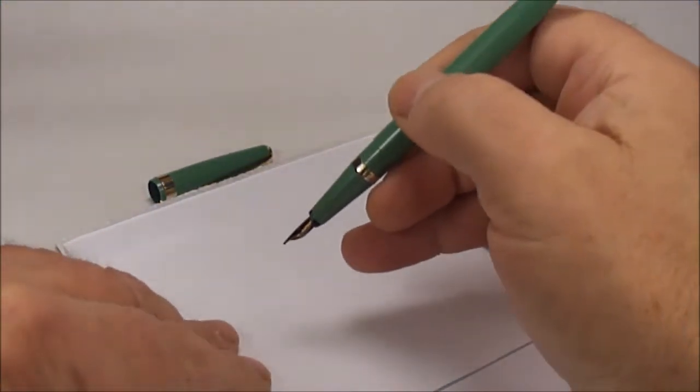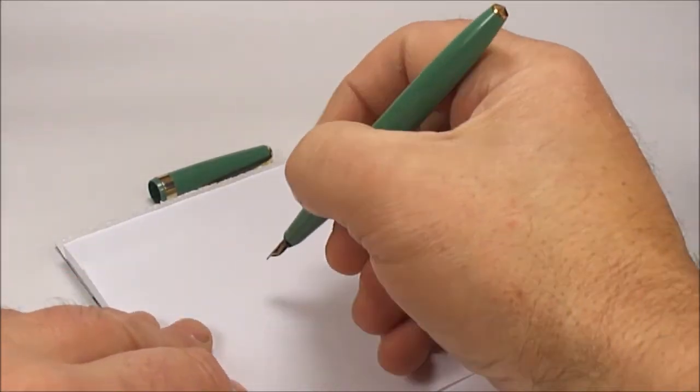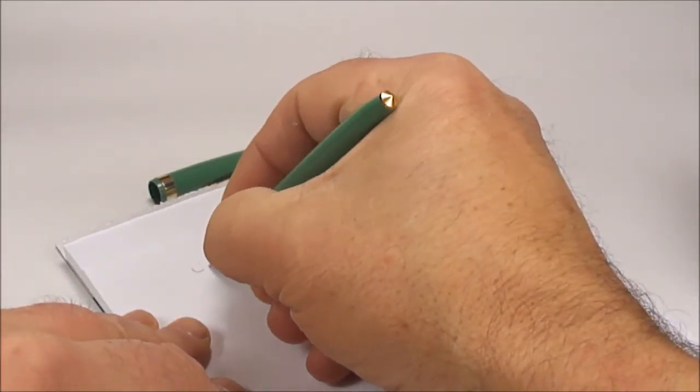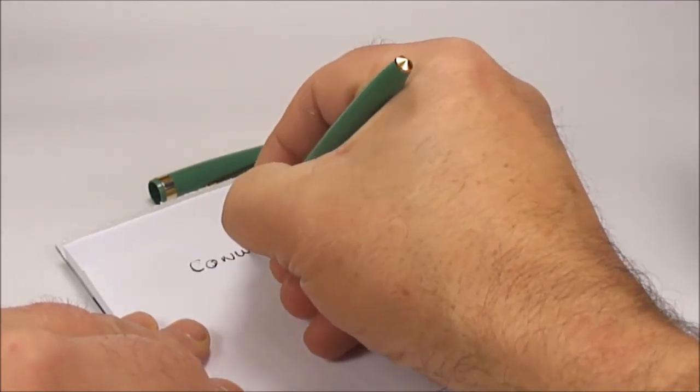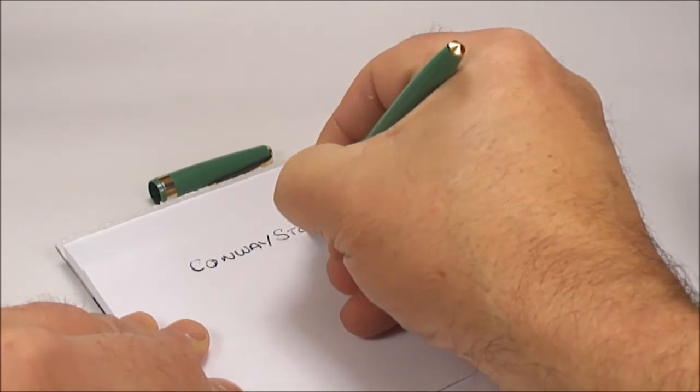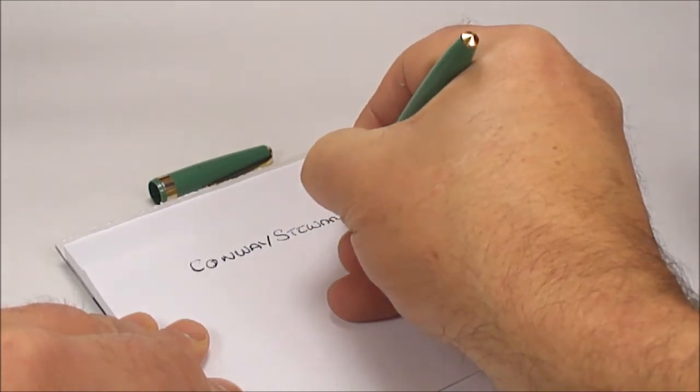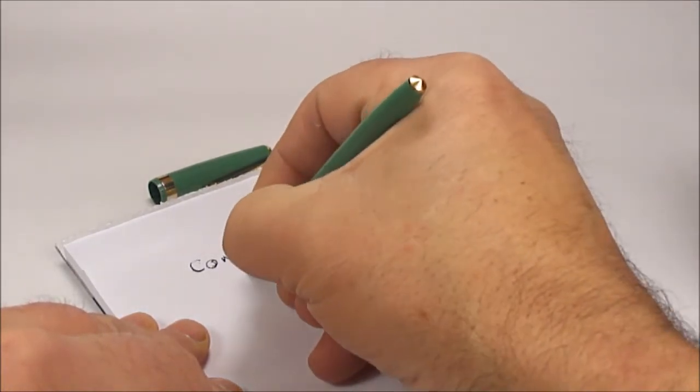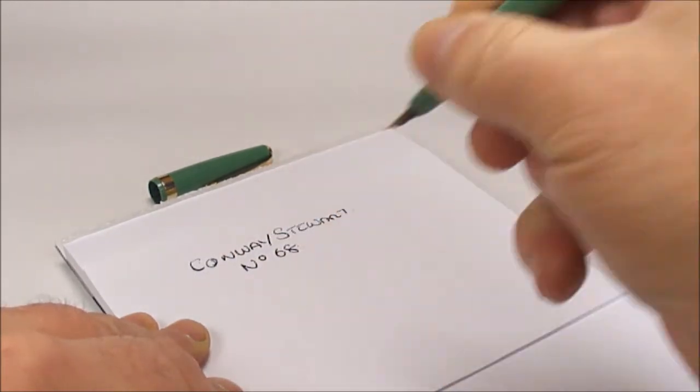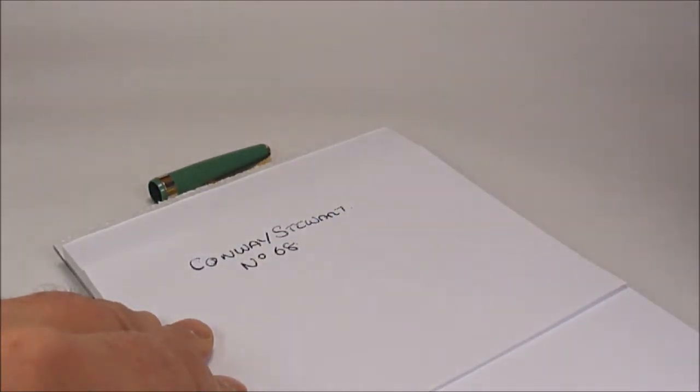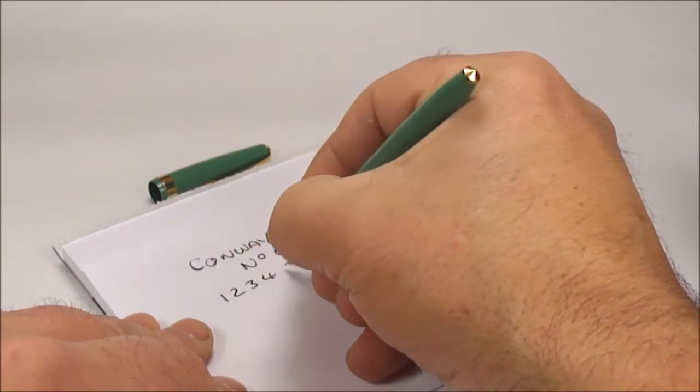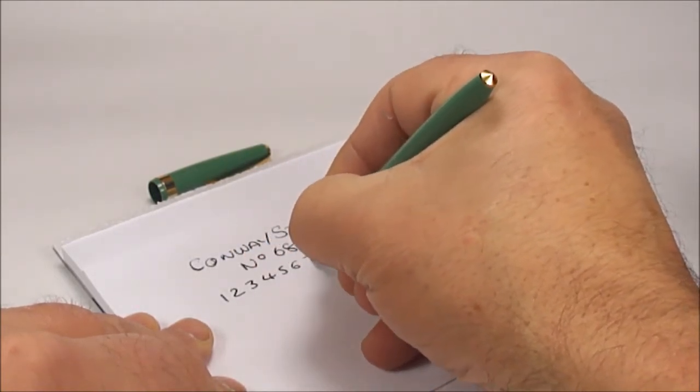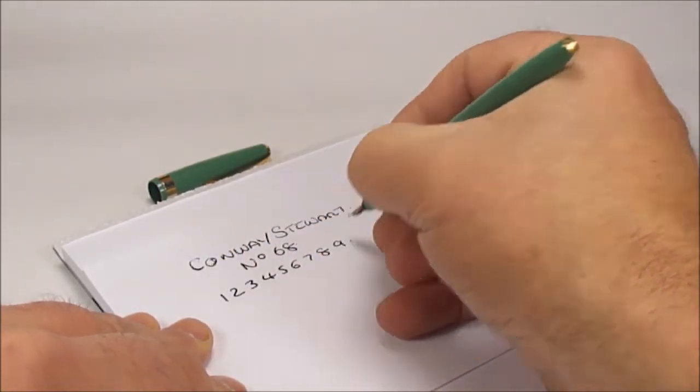And we'll just do a dip test. So as we said, what we've got: okay, Conway Stewart. And as we've already said, this one is a number 68. Let's give it a little dip. It's writing I would say, well in this case I would say a medium line, and it's writing nicely.